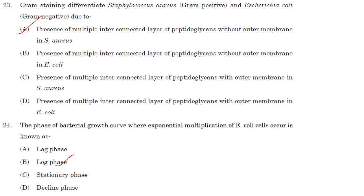The gram staining difference is due to the presence of multiple interconnected layers of peptidoglycans without an outer membrane in Staphylococcus aureus. E. coli has an outer membrane and does not have multiple interconnected layers of peptidoglycans. Staphylococcus aureus does not have an outer membrane. So option A is the correct answer.